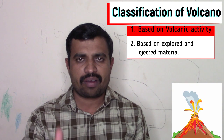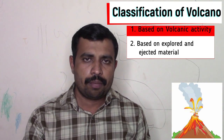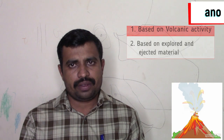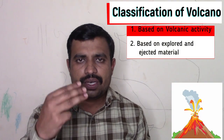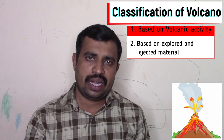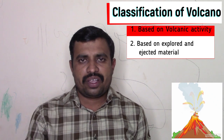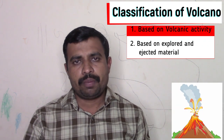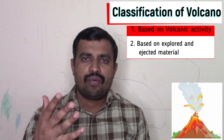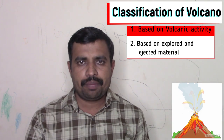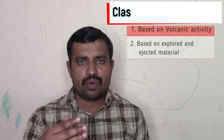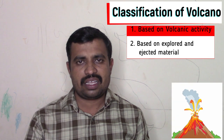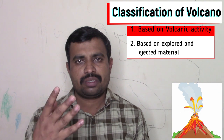In this lesson, we are going to discuss the remaining part of the volcano, that is the classification of the volcano. There are two types of classification. First, based on volcanic activity, there are three types: active volcanoes, dormant volcanoes, and extinct volcanoes. Second, based on the exploded and ejected material through the volcano, there are four types: Hawaiian type, Vesuvian type, Pelean type, and mud volcanoes.